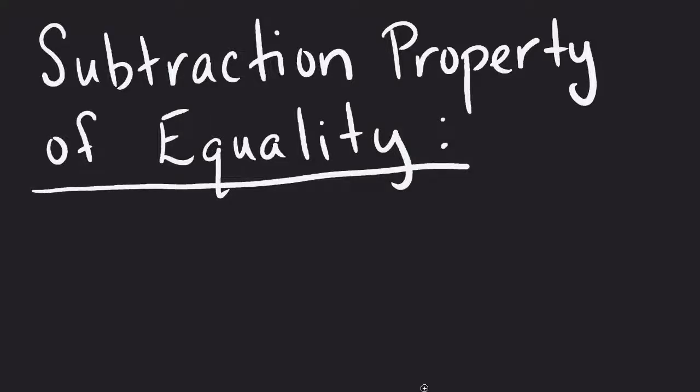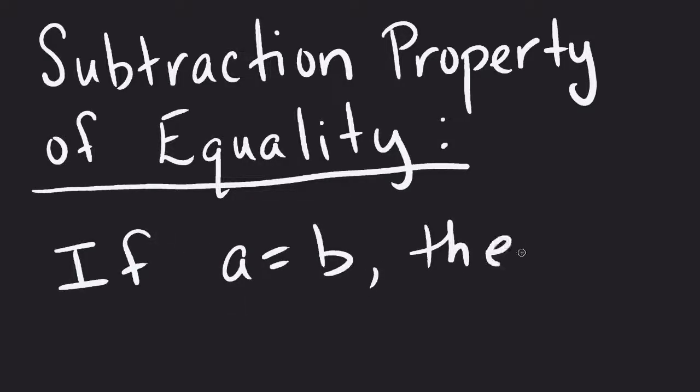The subtraction property of equality says that if we have A equal to B, then if I was to come along with some value, let's say C, and subtract it from both sides, that equality statement would remain true. So A minus C would still be equal to B minus C.